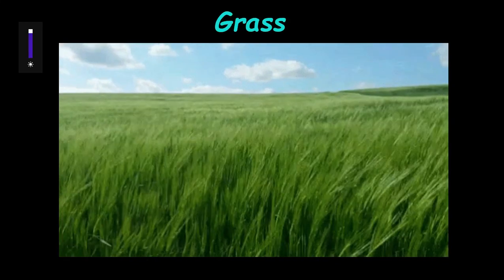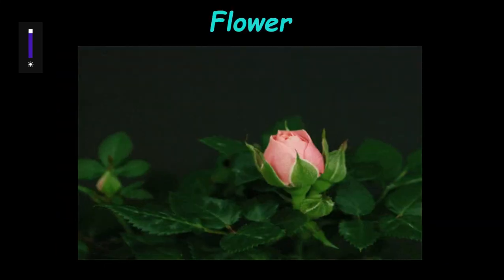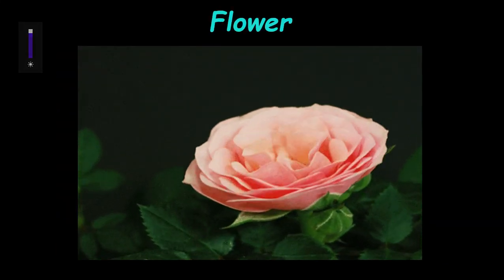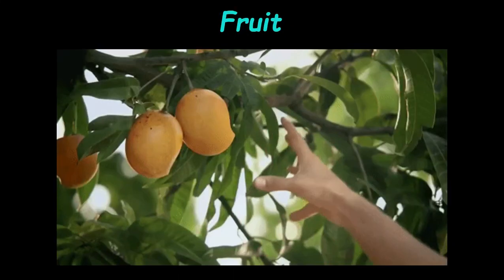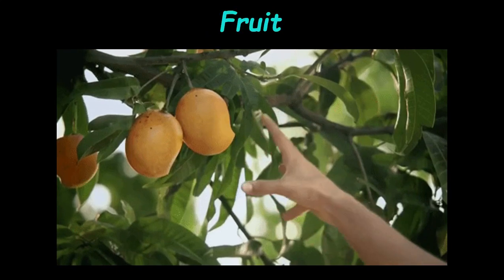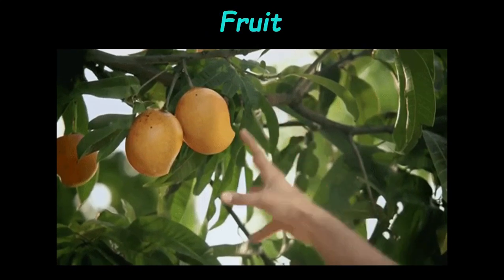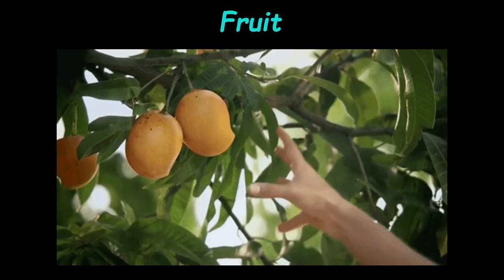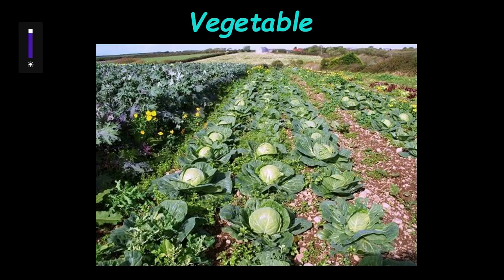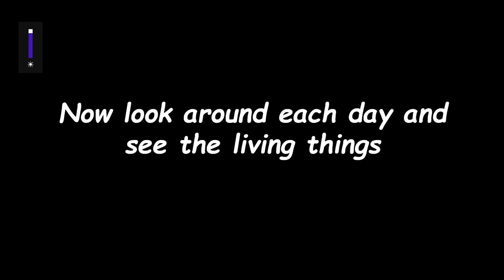Show me how it grows — a flower is a living thing. A fruit is a living thing. A vegetable is a living thing. Now look around each day and see the living things.